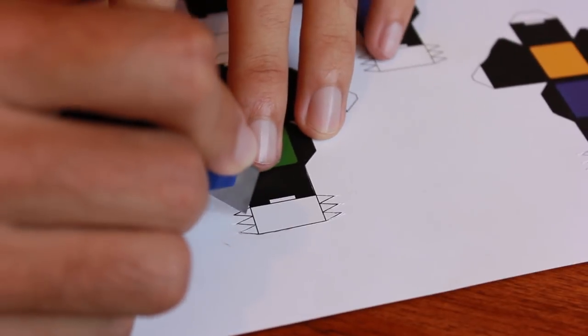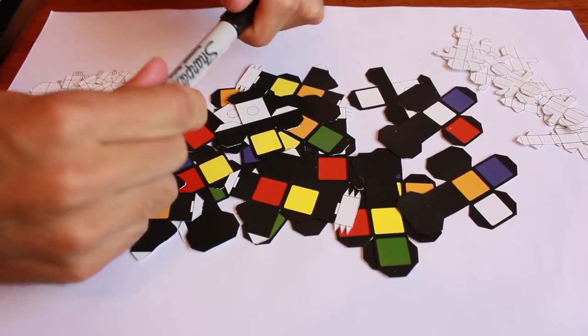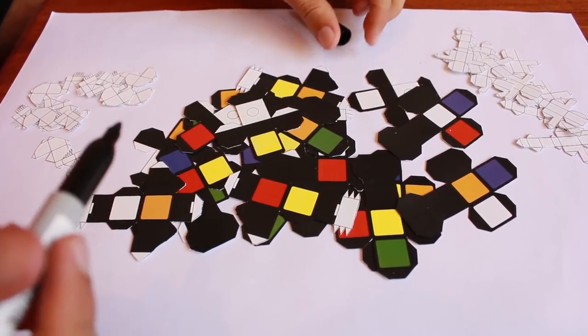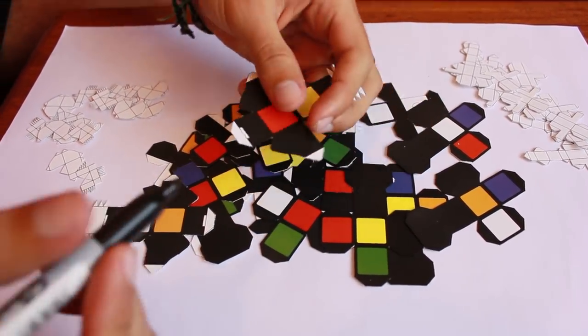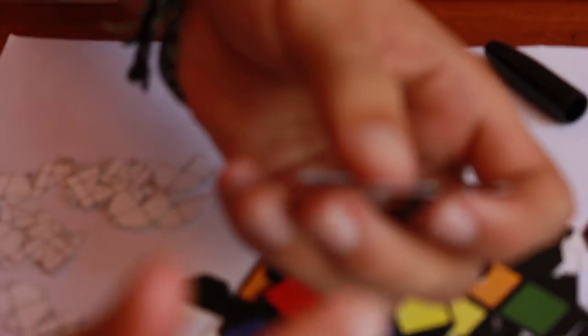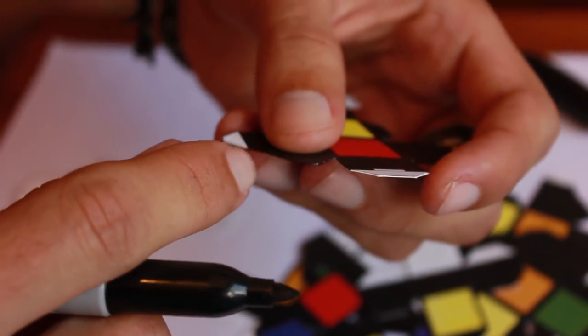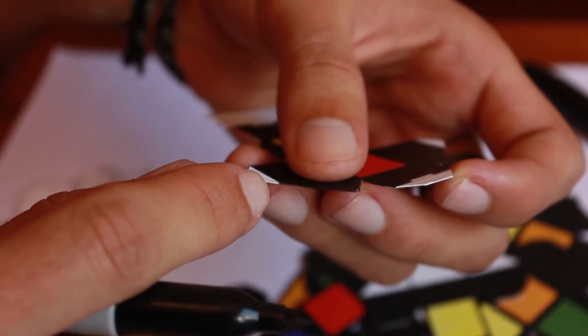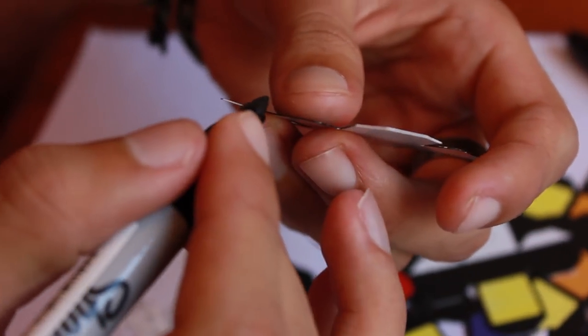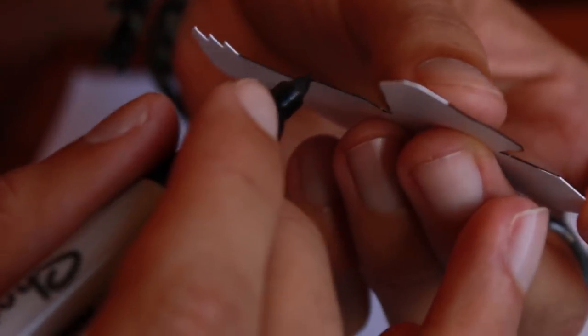After we finish cutting all the pieces we're gonna take a sharpie and begin to color the sides of the colored pieces that we'll be able to see once the cube is fully assembled. Now I know that's a bit confusing, so you can play it safe and take your sharpie and fill in any side that has color on it. Essentially we'll be filling in all the sides except the white flaps. Alternatively we can wait until we glue together each piece and then fill in any white exposed edges that we see.